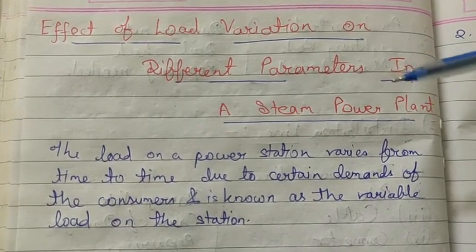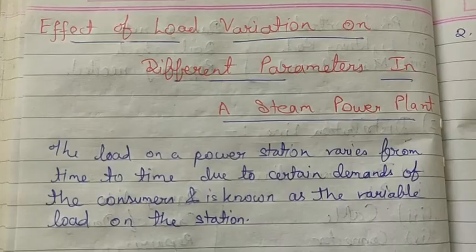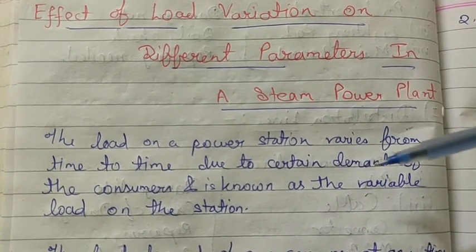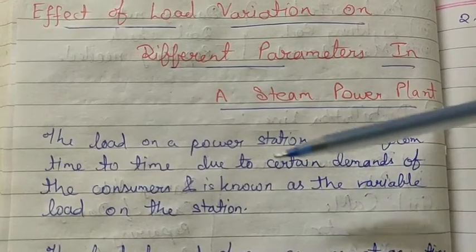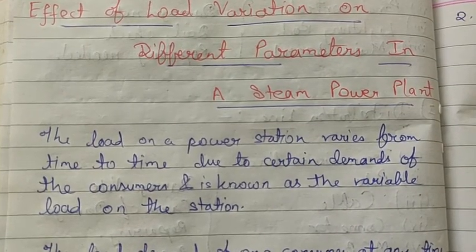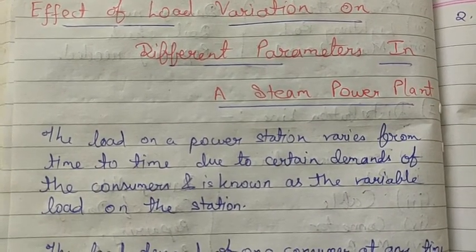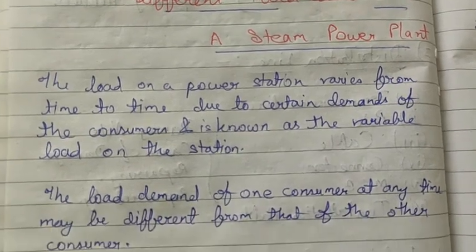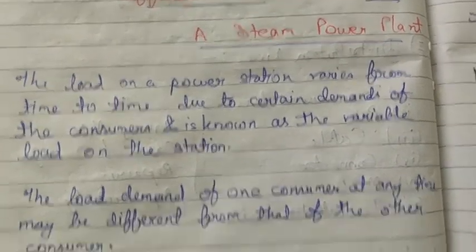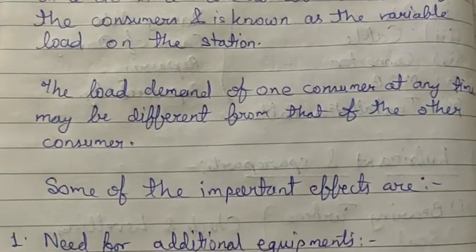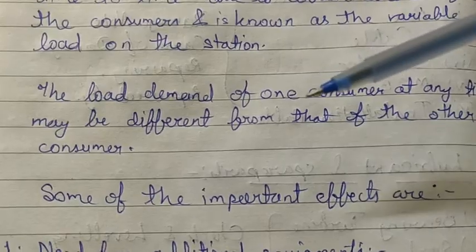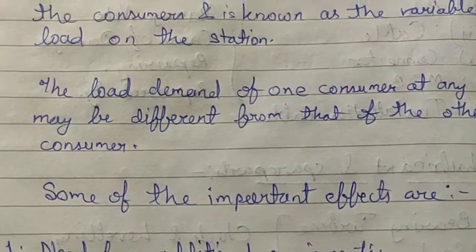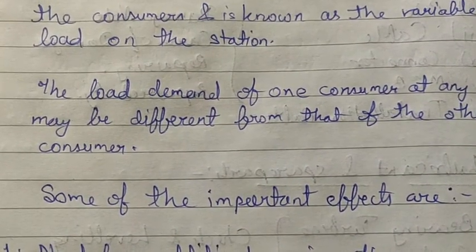What is the effect of load variation on parameters in a power plant? Power plant load varies from time to time as per demand of the consumers, and this is also known as variable load on the stations. Consumers at a given time do not have the same demand, so the consumer needs vary, causing the plant to fluctuate and experience effects.